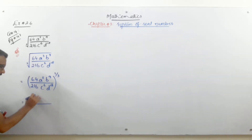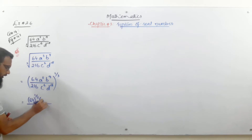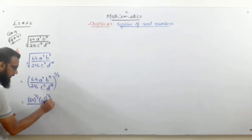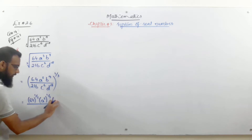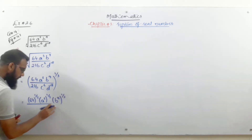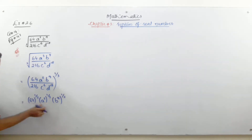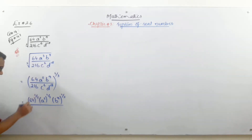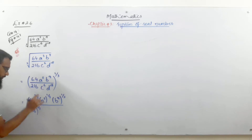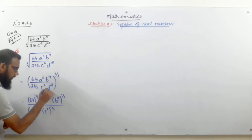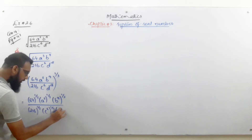So 64 will get power 1/3. The cube of a will also get power 1/3. Then b^9 will also get power 1/3. In the denominator: 216 gets power 1/3, c^6 gets power 1/3, and d^18 also gets power 1/3.